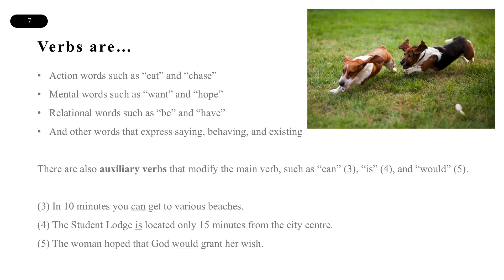Verbs are action words such as eat and chase, mental words such as want and hope, relational words such as be and have, and other words that express saying, behaving, and existing. There are also auxiliary verbs that modify the main verb, such as can, is, and would.